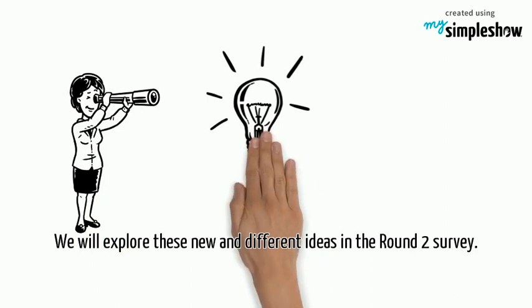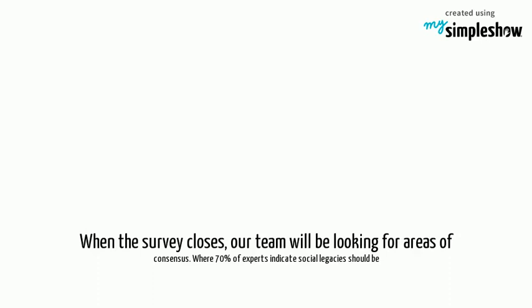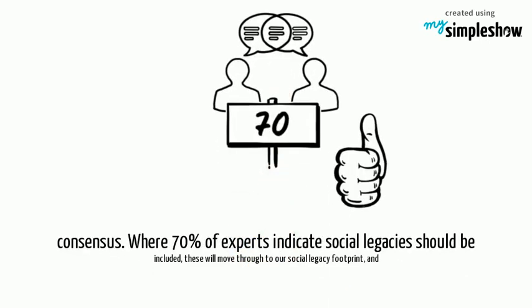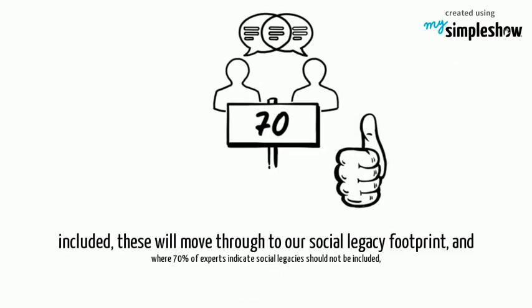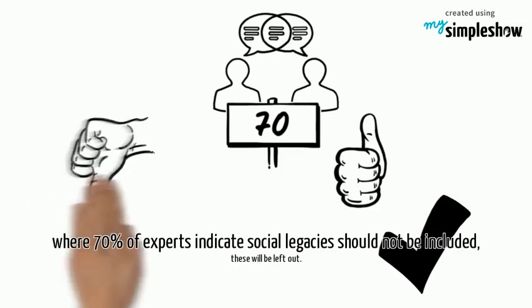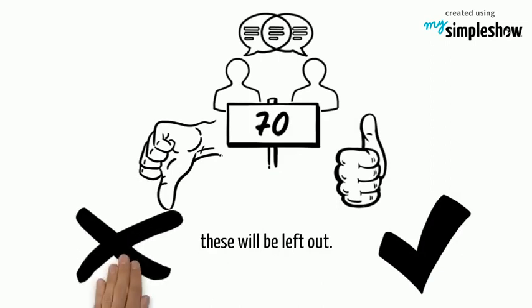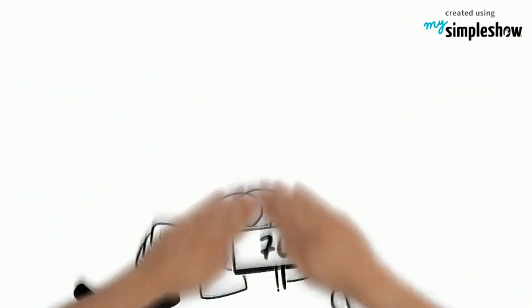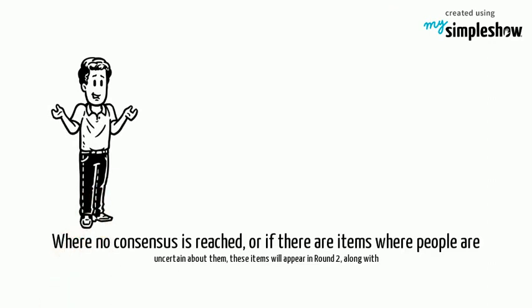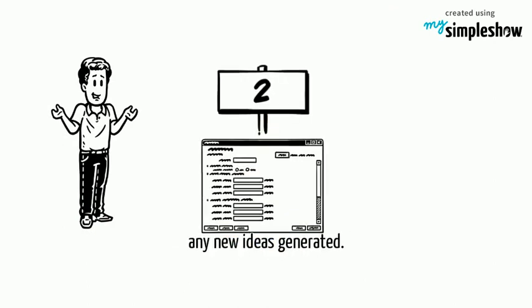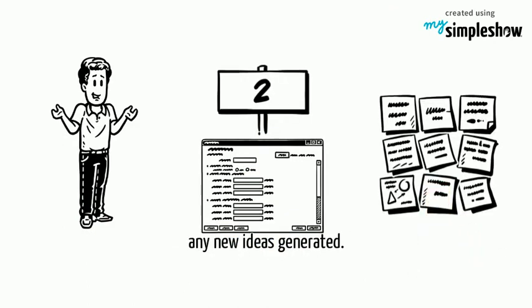We will explore these new and different ideas in the round two survey. When the survey closes, our team will be looking for areas of consensus. Where 70% of experts indicate social legacies should be included, these will move through to our social legacy footprint. Where 70% indicate they should not be included, these will be left out. Where no consensus is reached, or if there are items people are uncertain about, these items will appear in round two, along with any new ideas generated in round one.